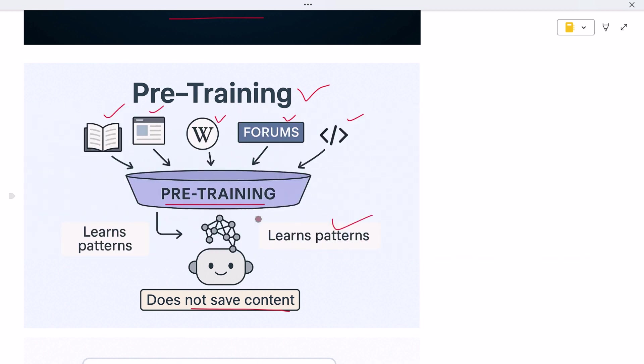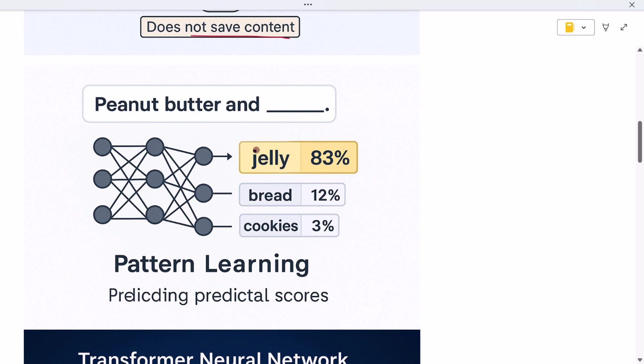So for example, if you say peanut butter and, it knows that jelly is a very likely word to come next. This is the core idea of pre-training: not memorizing, but predicting. And that prediction skill comes from patterns it saw in billions of sentences. So how does it actually learn?